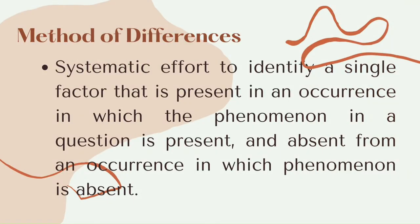The Method of Difference identifies a single factor that is present in an occurrence where the phenomenon is present and absent from an occurrence where the phenomenon is absent. One situation leads to an effect and another does not, and the only difference is the presence of a single factor in the first situation. You can infer this factor as the cause of the effect.